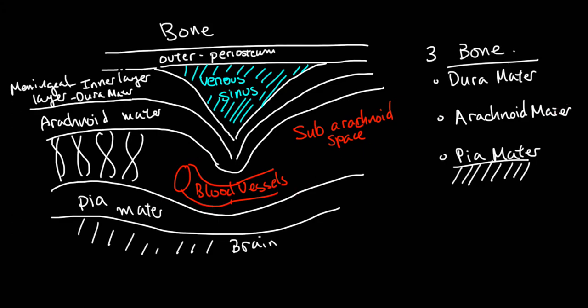And the next thing is cerebrospinal fluid. CSF also resides in the subarachnoid space. So that's the two things you need to know: subarachnoid space, blood vessels and CSF.